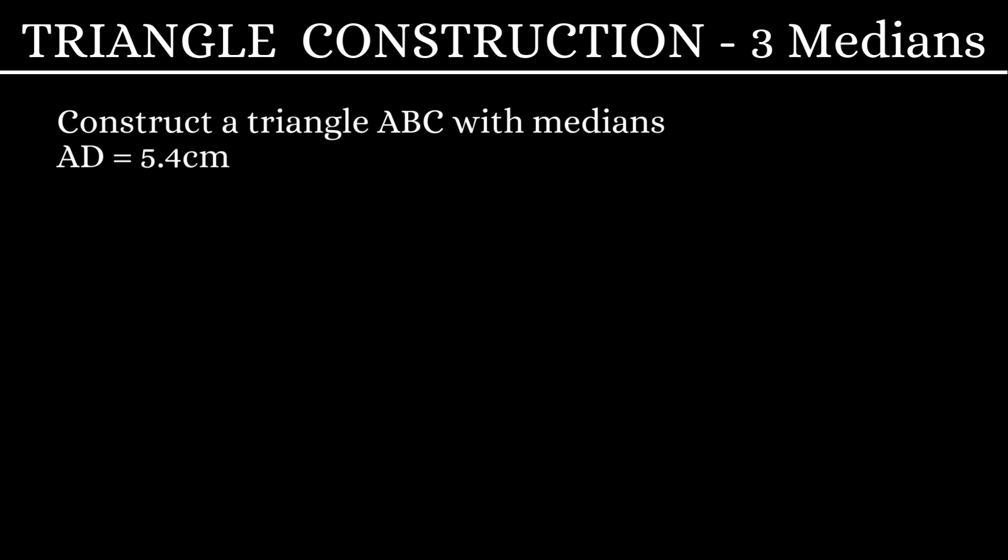Let's learn a special case of triangle construction where the dimensions of three medians are given. Construct a triangle ABC given the median AD is 5.4 cm, BE is 6 cm, and CF is 8.1 cm.